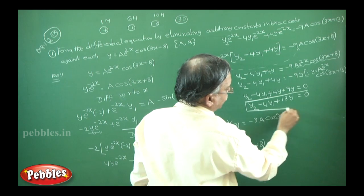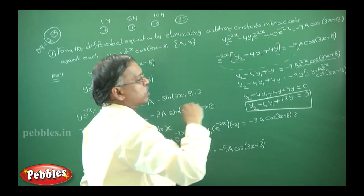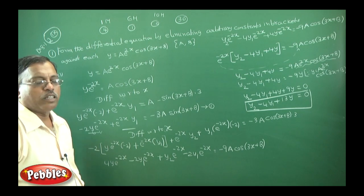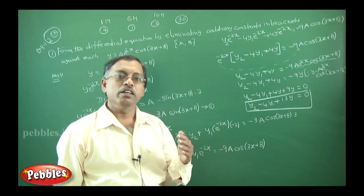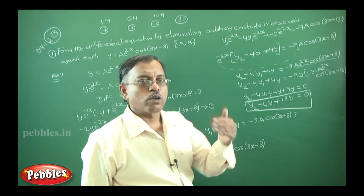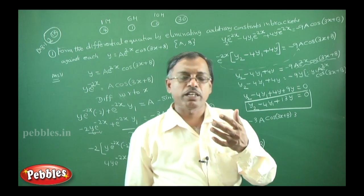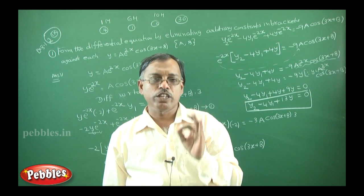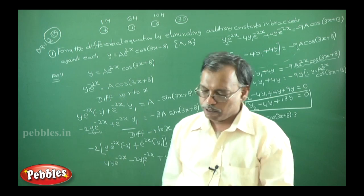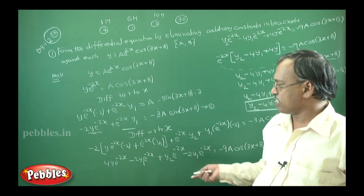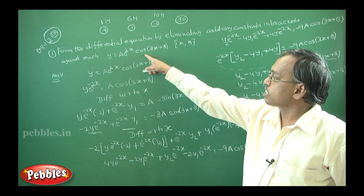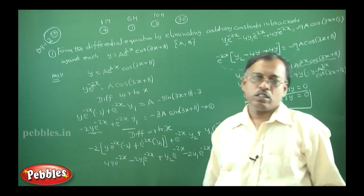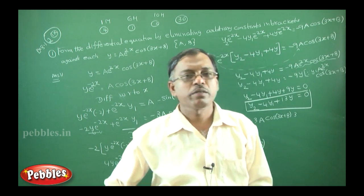Rearranging: y₂ − 4y₁ + 4y + 9y = 0, which gives y₂ − 4y₁ + 13y = 0. That is the final answer. This is the meaning of framing the differential equation by eliminating arbitrary constants: count the arbitrary constants, differentiate that many times, rearrange, substitute the given condition, and you will get the answer automatically.